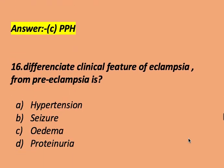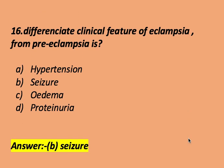The differentiated clinical feature of eclampsia from preeclampsia is: hypertension, seizure, edema, or proteinuria. The right answer is seizure. Seizure is the differentiated clinical feature of eclampsia from preeclampsia — seizure is present in eclampsia but not in preeclampsia.